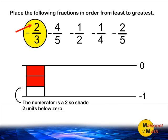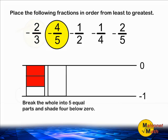Next, we are going to diagram negative four-fifths. We start by drawing one whole box underneath four-fifths and dividing that whole into five equal parts. After dividing it into five equal parts, we shade four units directly below zero. That's what four-fifths below zero would look like.